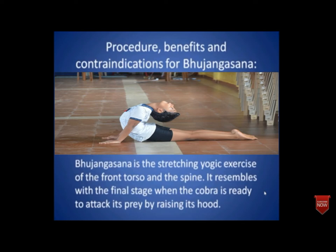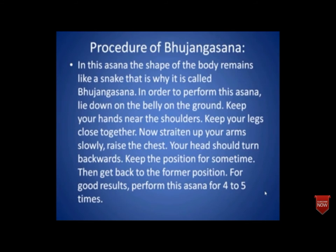Diabetes can be managed if asanas are followed regularly. In Bhujangasana, the shape of the body resembles a snake, which is why it is so named. To perform it, lie down on your belly on the ground, keep your hands near the shoulders and legs close together. Then straighten your arms slowly and raise your chest. Your head should turn backward toward the wall or ceiling. Keep this posture for some time, then return to normal. For good results, perform this asana 3 to 5 times.